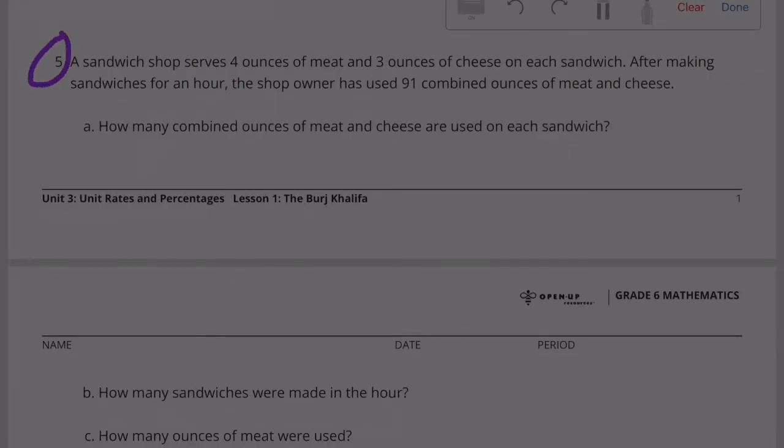Number 5: A sandwich shop serves 4 ounces of meat and 3 ounces of cheese on each sandwich. After making sandwiches for an hour, the shop owner has used 91 combined ounces of meat and cheese. Part A: How many combined ounces of meat and cheese are used on each sandwich? Well, there's 4 ounces and 3 ounces, so 4 ounces of meat plus 3 ounces of cheese is a combined 7 ounces.